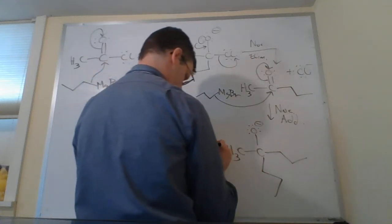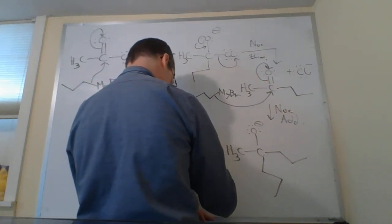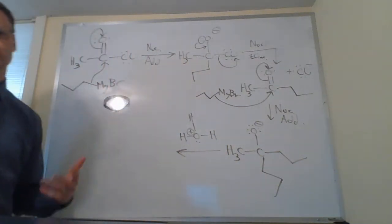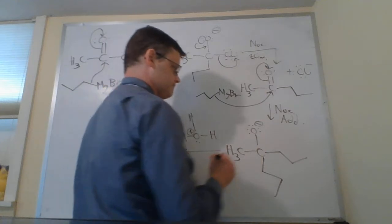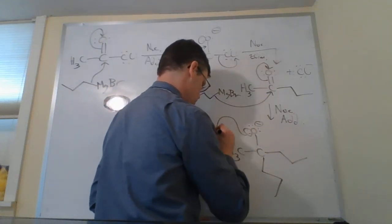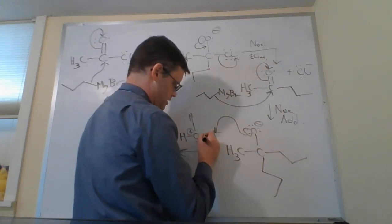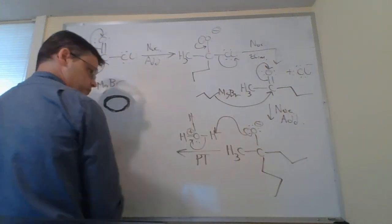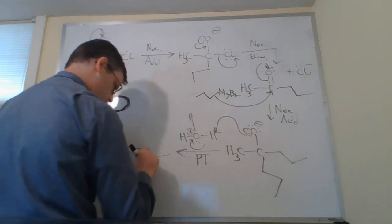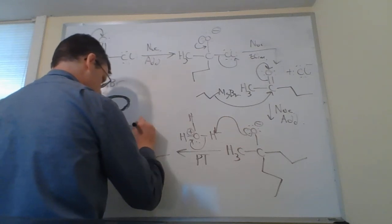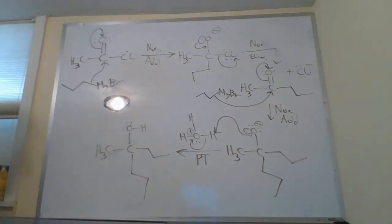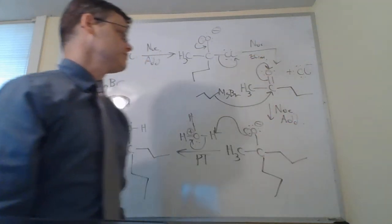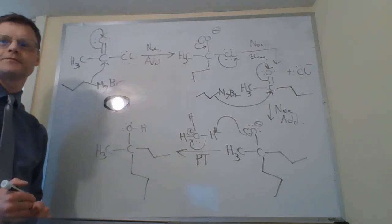And then our water workup happens. I've got H3O+ - maybe this was generated from a mixture of hydrochloric acid and water, maybe three molar HCl. Let me do a proton transfer. And here we've generated a tertiary alcohol with the propyl groups. So our steps here in summary are: nucleophilic addition, nucleophilic elimination, a second nucleophilic addition, and then we round this off with a proton transfer.